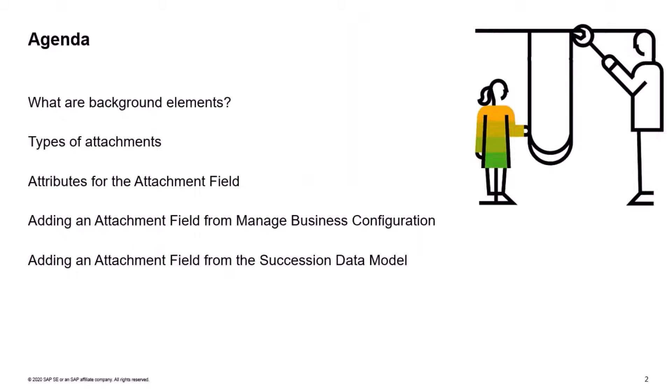We will first define what background elements are. Then we'll see the types of attachments that we can use in background elements. We'll speak about the attributes for the attachment field, and then we will go into the tool and add an attachment field from Manage Business Configuration. We will also add an attachment field from the succession data model.